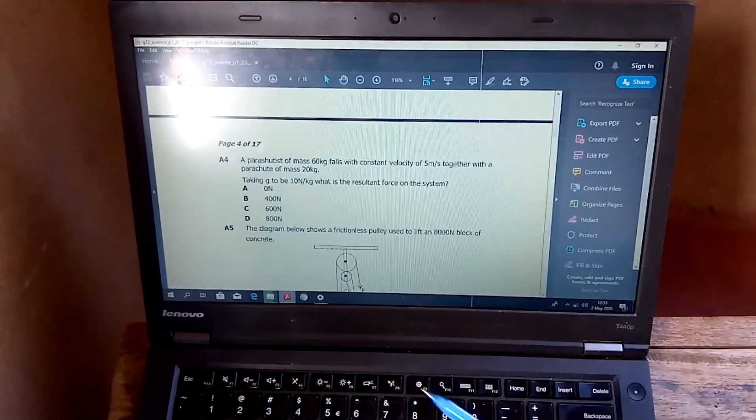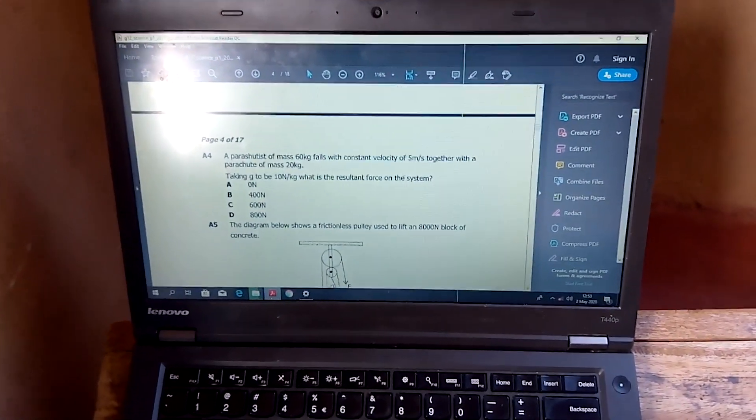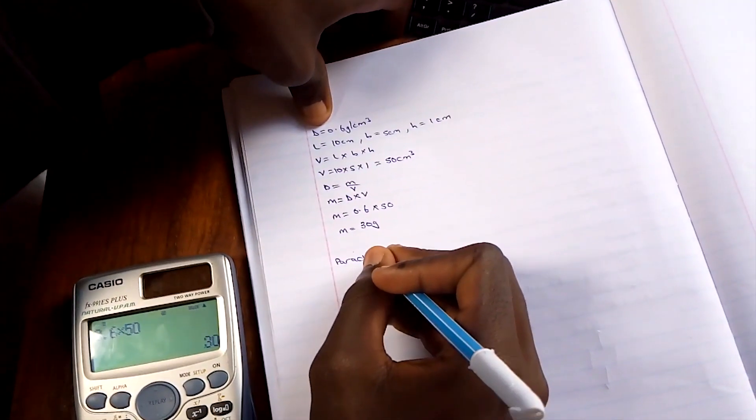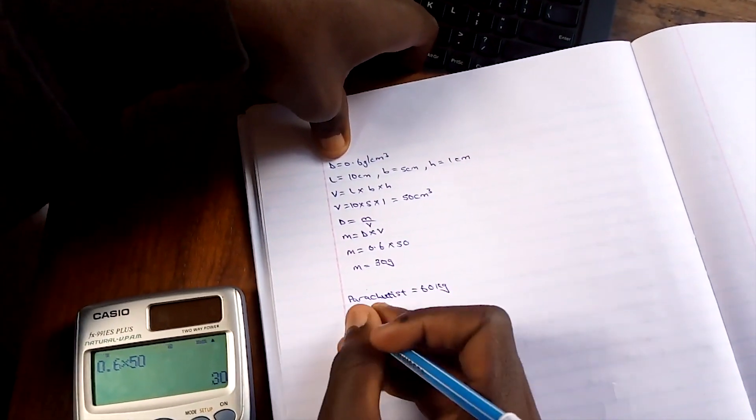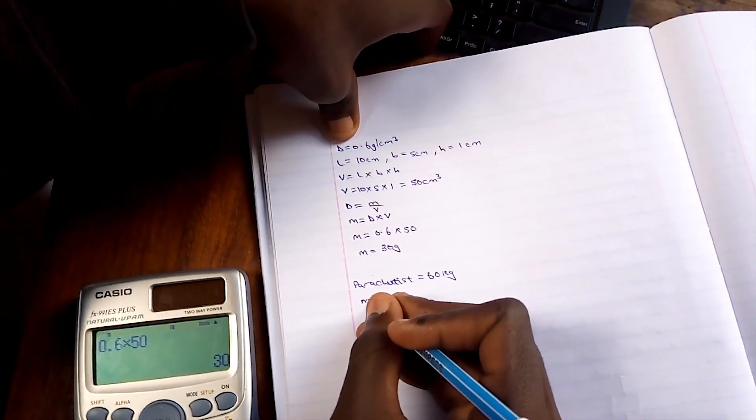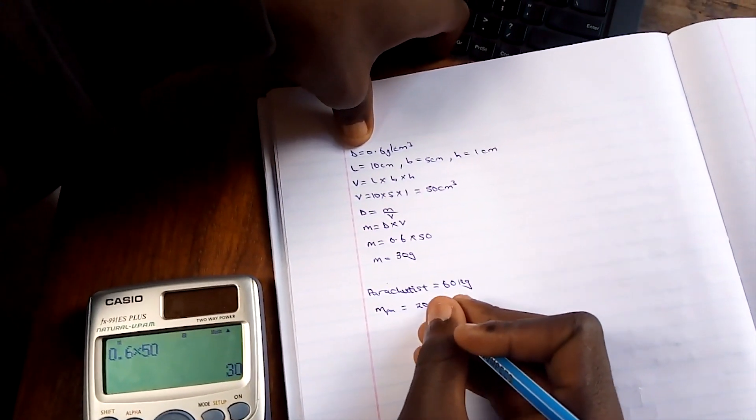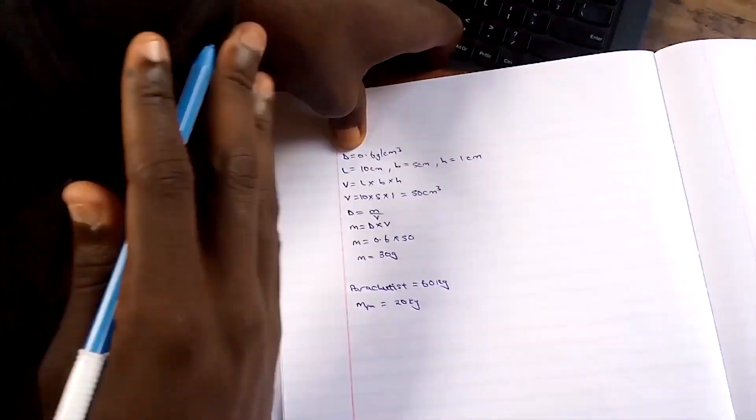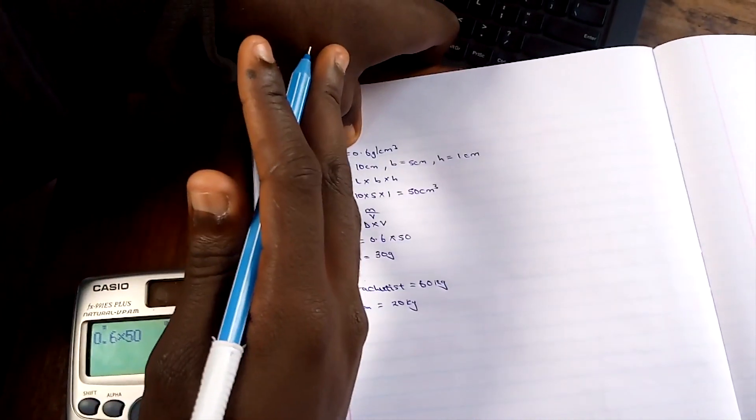Question 4: A parachutist of mass 60 kg. And then the mass of the parachute is equal to 20 kg. They've given us a velocity of 5 meters per second. Taking G to be 10 newtons per kg. What is the resultant force on the system?